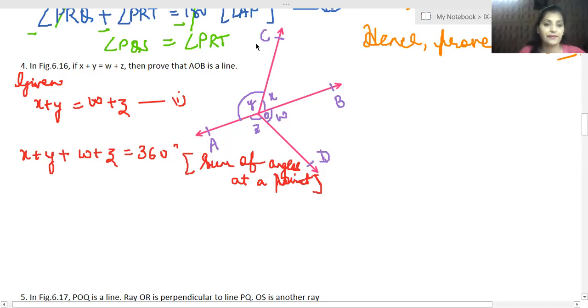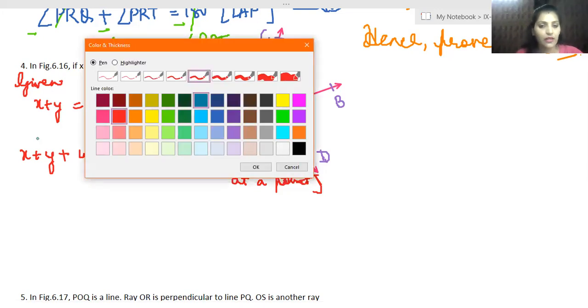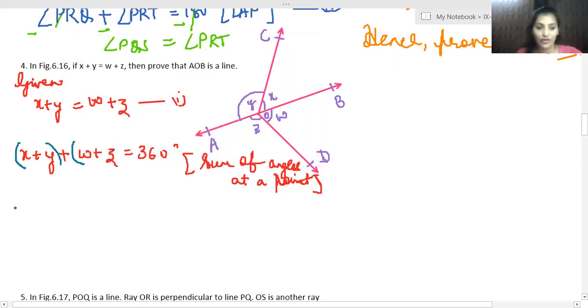Now here we do one twist. What is that twist? We will use some brackets. We will take x plus y in place of w and z, yes.